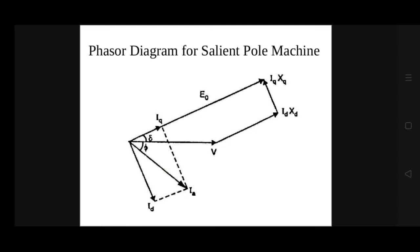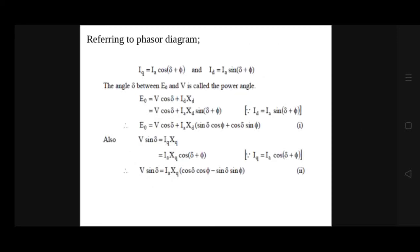From the tip of V, we draw Id·Xd perpendicular to Id. From the tip of Id·Xd, we draw Iq·Xq perpendicular to Iq. Taking the phasor sum of V, Id·Xd, and Iq·Xq, we obtain E0, the EMF per phase to which the generator is excited. This is the simplest way to draw the phasor diagram for a salient pole machine. Referring to the phasor diagram, we can write: Iq = Ia·cos(δ + φ) and Id = Ia·sin(δ + φ), where δ is the power angle — the angle between V and E0 — and φ is the power factor angle.